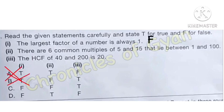Statement 2: there are 6 common multiples of 5 and 15 that lie between 1 and 100. The multiples of 15 are: 15, 30, 45, 60, 75, 90 — all of these are also multiples of 5. So there are exactly 6 common multiples of 5 and 15 between 1 and 100. Statement 2 is True.